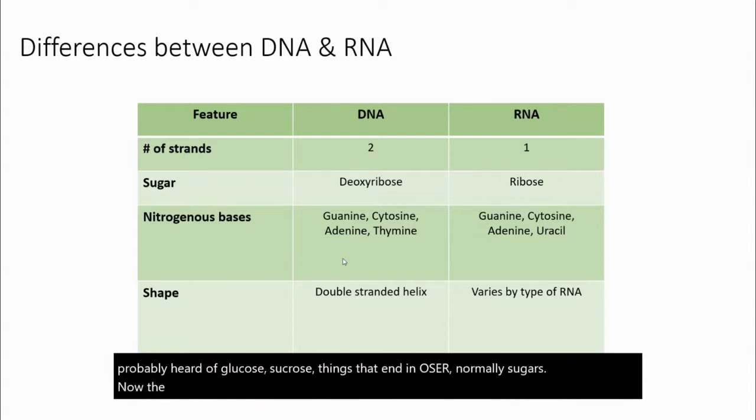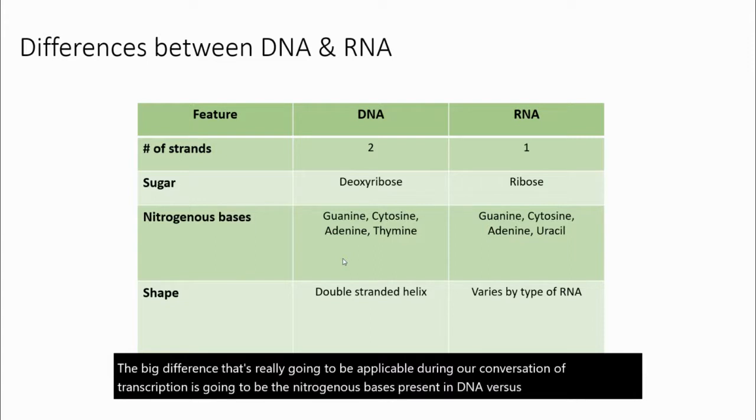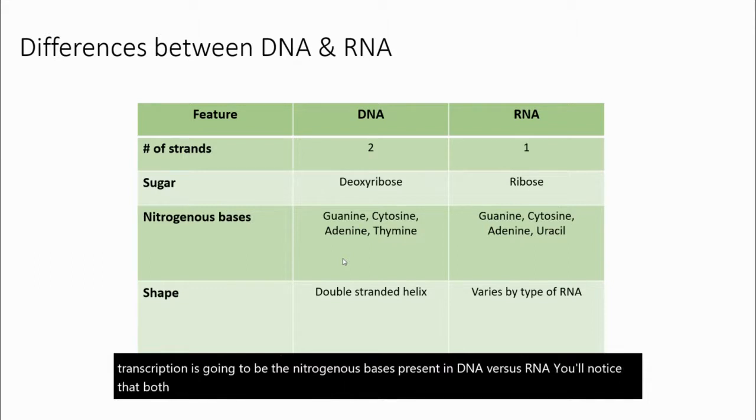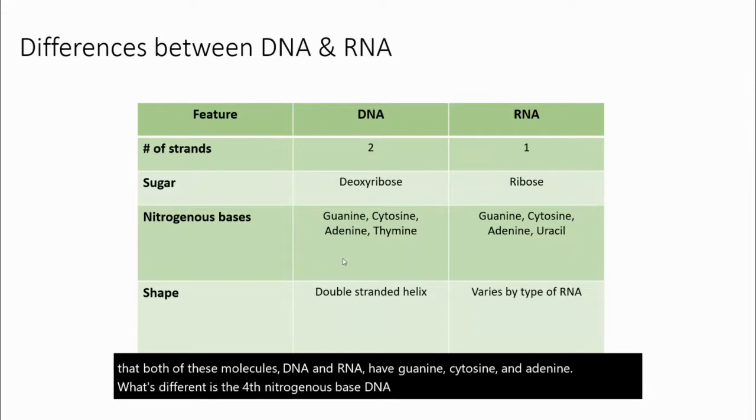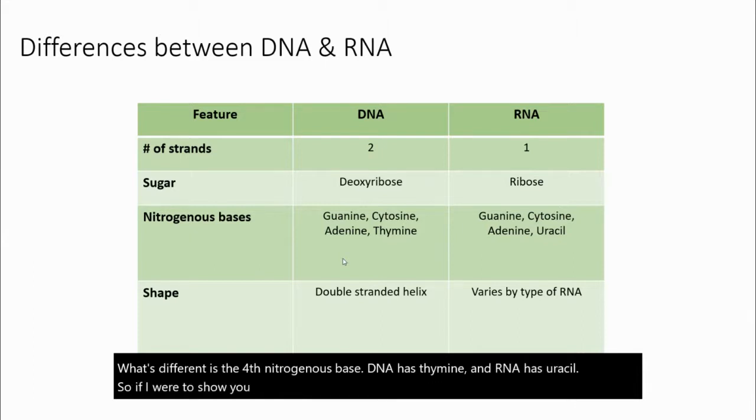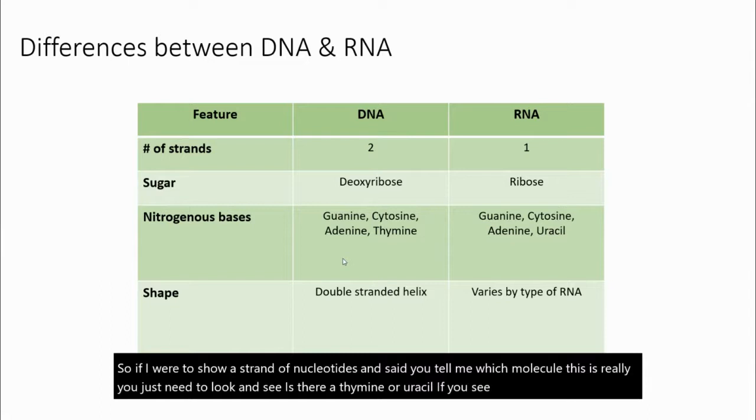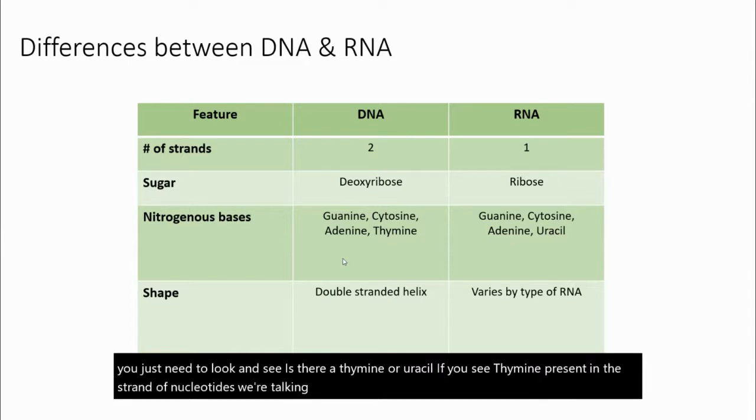The big difference that's really going to be applicable during our conversation of transcription is the nitrogenous bases present in DNA versus RNA. Both molecules have guanine, cytosine, and adenine. What's different is the fourth nitrogenous base. DNA has thymine, and RNA has uracil. So if I were to show you a strand of nucleotides, you just need to look and see, is there a thymine or a uracil? If you see thymine present in the strand, we're talking about DNA. If you see uracil, then you're looking at a strand of RNA.